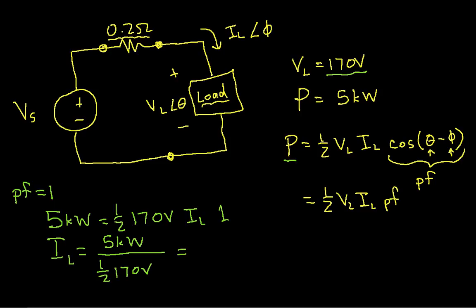I can solve this for IL. I get IL is 5 kilowatts over one-half times 170 volts. And if I work this out, you have to remember 5 kilowatts is 5,000 watts. I've seen students mess that up quite a bit. So you've got 5,000 divided by one-half times 170. And if I've worked this out correctly, this is 58.8 amps. So that says with a power factor of 1, I need to have 58.8 amps flowing through my load with a voltage across it of 170 volts to get my 5 kilowatts.